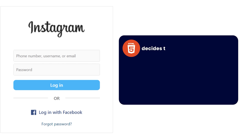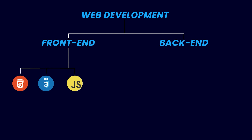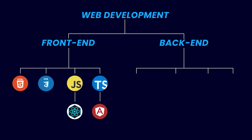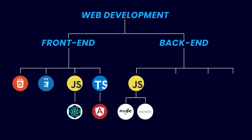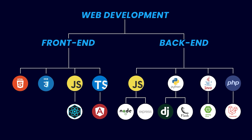On the login page, HTML decides that there is a login button, CSS decides that the button is blue in color, and JavaScript decides what happens when you click that button. Along with HTML, CSS, and JavaScript, you might also want to learn React, which is a popular JavaScript library, or Angular, which is a TypeScript-based framework. TypeScript is a statically typed variation of JavaScript. For back-end development, you have many options: JavaScript with Node.js and Express, Python with Django or Flask, Java with Spring Boot, or PHP with Laravel. If I was picking a language, I would pick JavaScript because you can use it in both front-end and back-end.